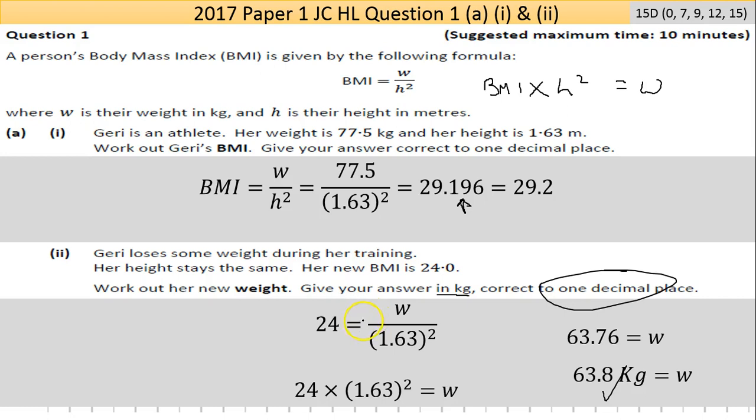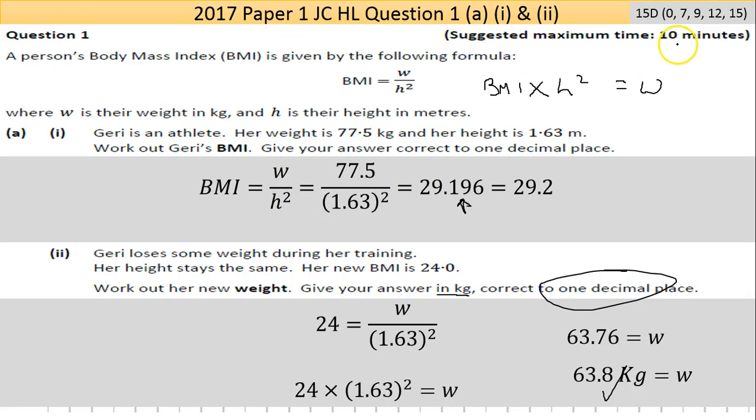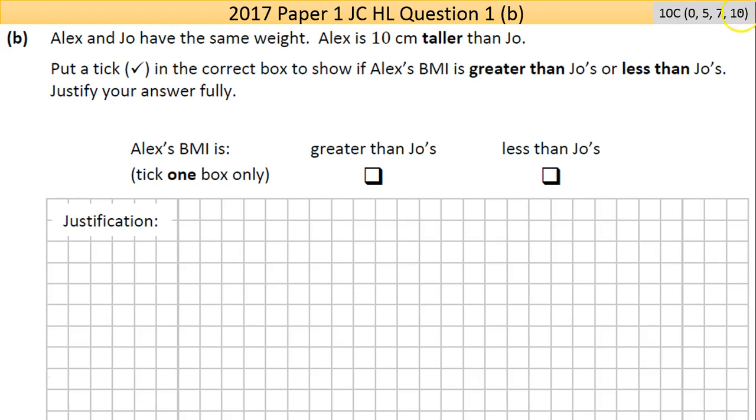So that's question 1, part 2. Now part B here is a 10C. So 3 or 5 marks for the whole thing. So a lot of marks for part A, 10 marks for part C. Alex and Joe have the same weight. Alex is 10cm taller than Joe. Put a tick in the correct box to show if Alex's BMI is greater than Joe's or less than Joe's.